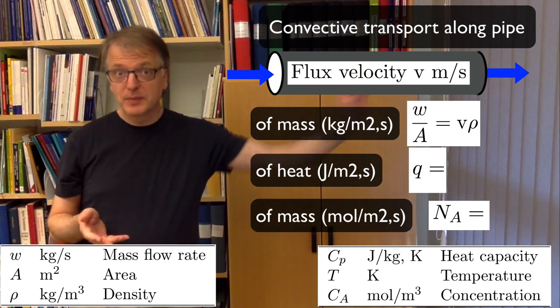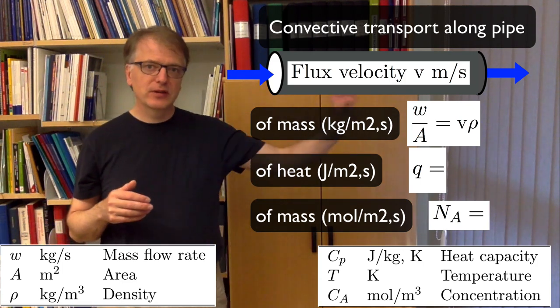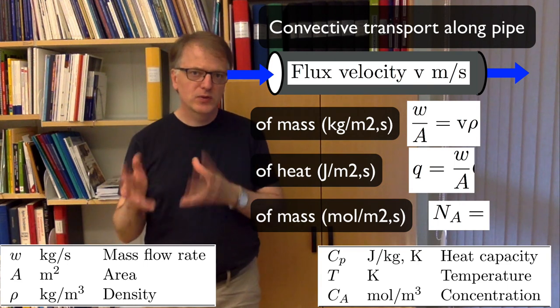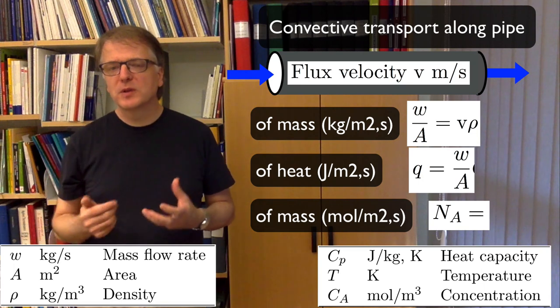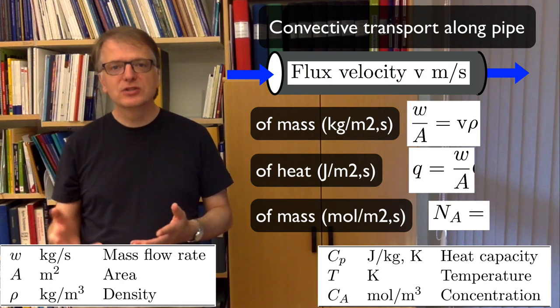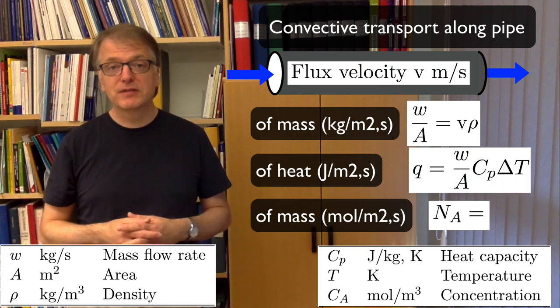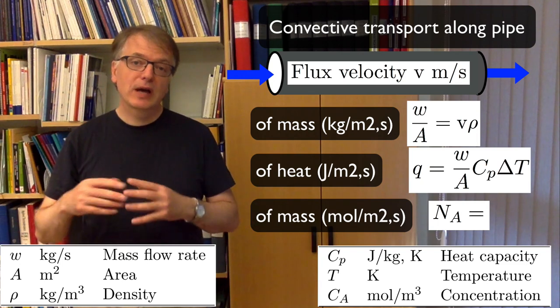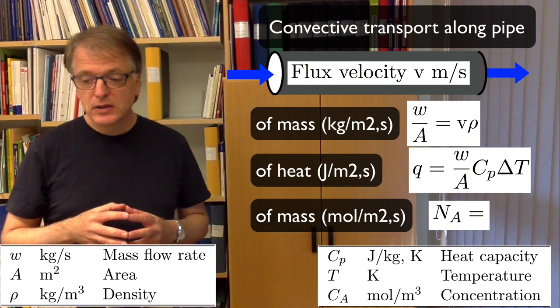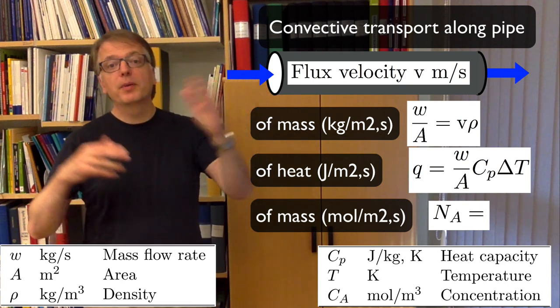Okay, what about heat transfer along the pipe? Well, if you know the mass transfer, you know the heat transfer has to have something to do with that, right? So it should be something w/A times something. And what should we multiply it with? Well, we should multiply it with some kind of energy content. And we will talk about heat here as a kind of energy. And how much energy is in that? Well, you take the heat capacity times a temperature difference. And what kind of temperature difference? Well, you have to have a reference temperature. So this is a kind of enthalpy balance we make here. So you take w/A times heat capacity times the temperature difference, the temperature of the flow compared to a reference temperature.